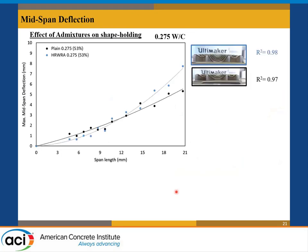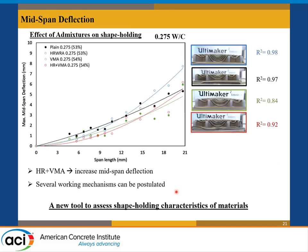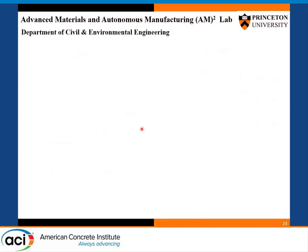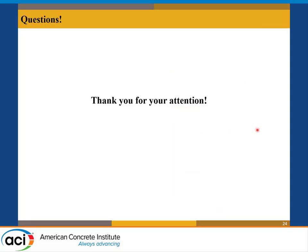You can put all the data together by looking at mid-span deflection over variant span length and examine the correlations and shapes. It could be a new tool to assess the shape-holding characteristics of the material. I wanted to acknowledge the support of NSF on this project and the Lyles School of Civil Engineering. At Princeton, we work on a number of different problems related to design and manufacturing of these systems. Thank you.